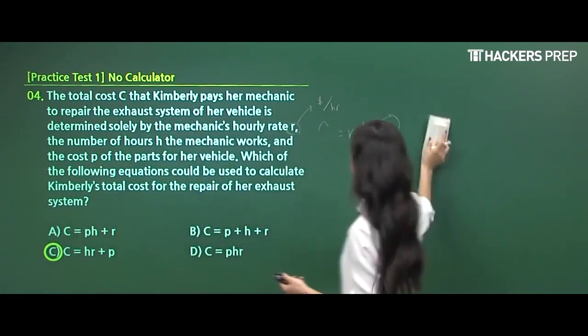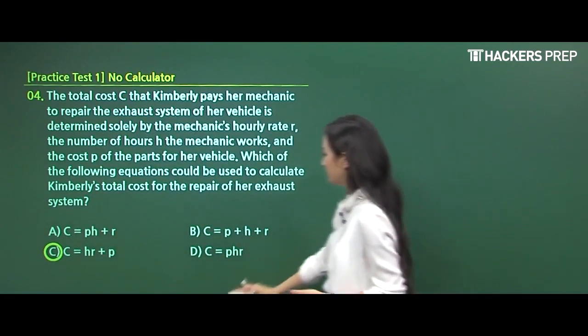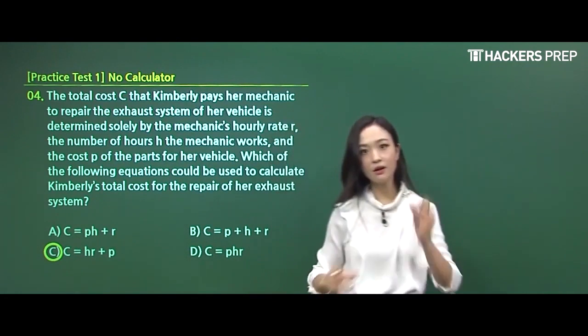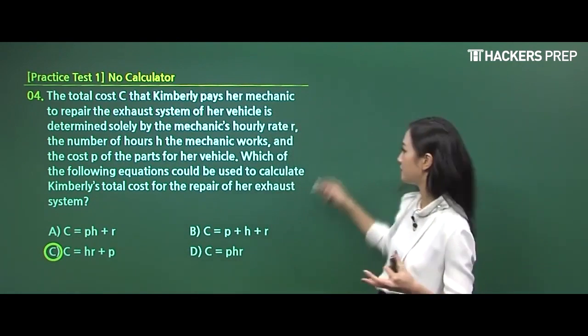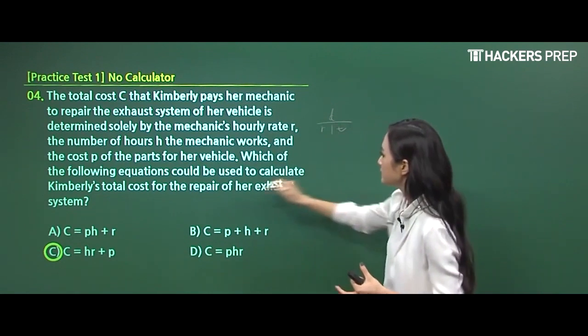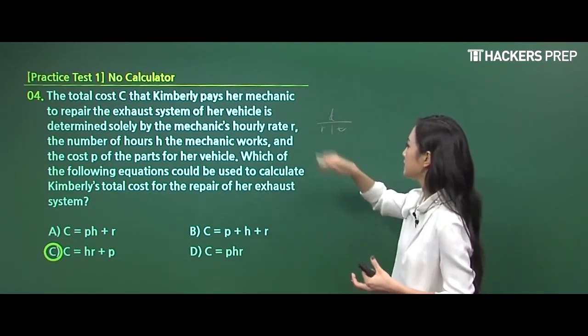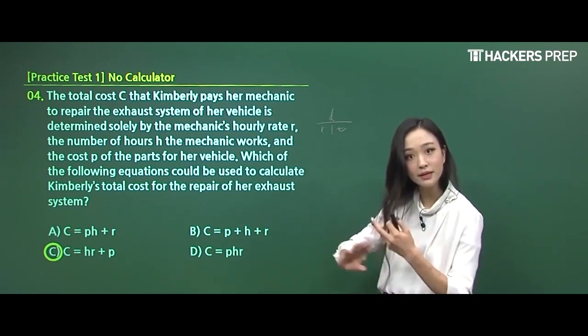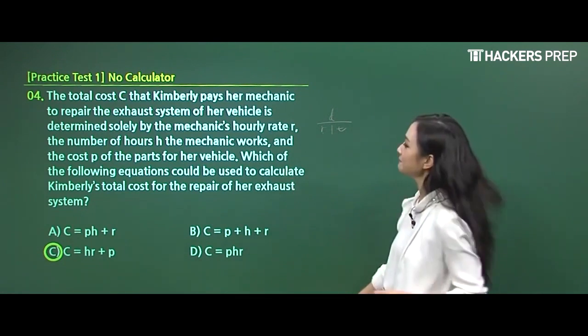So number four was a basic question involving concept of rates and expressions and it all ties back to that simple equation of distance, rate, and time. But this question is involving the rate, not in terms of distance but work. And you have to just replace that variable with work.